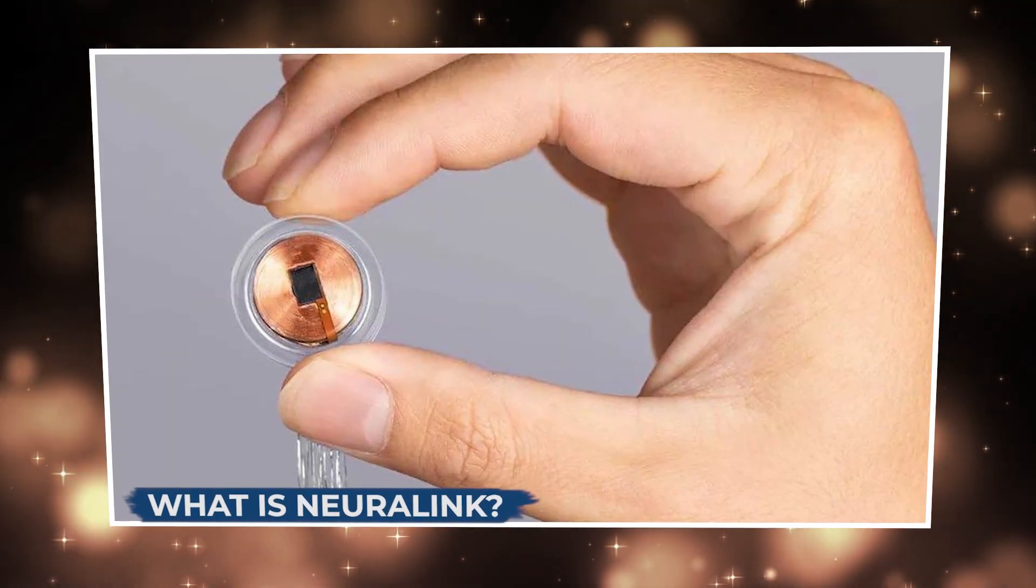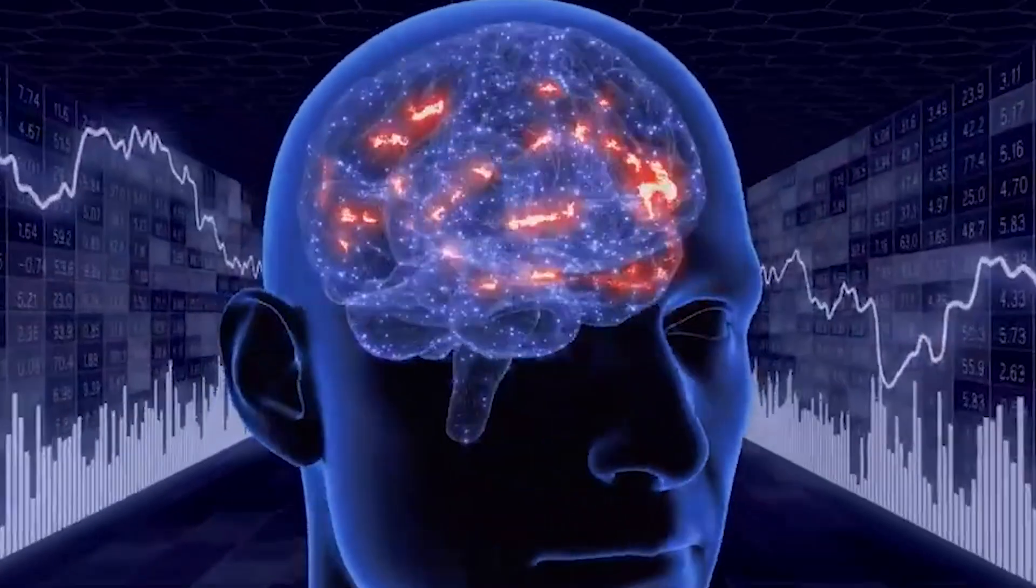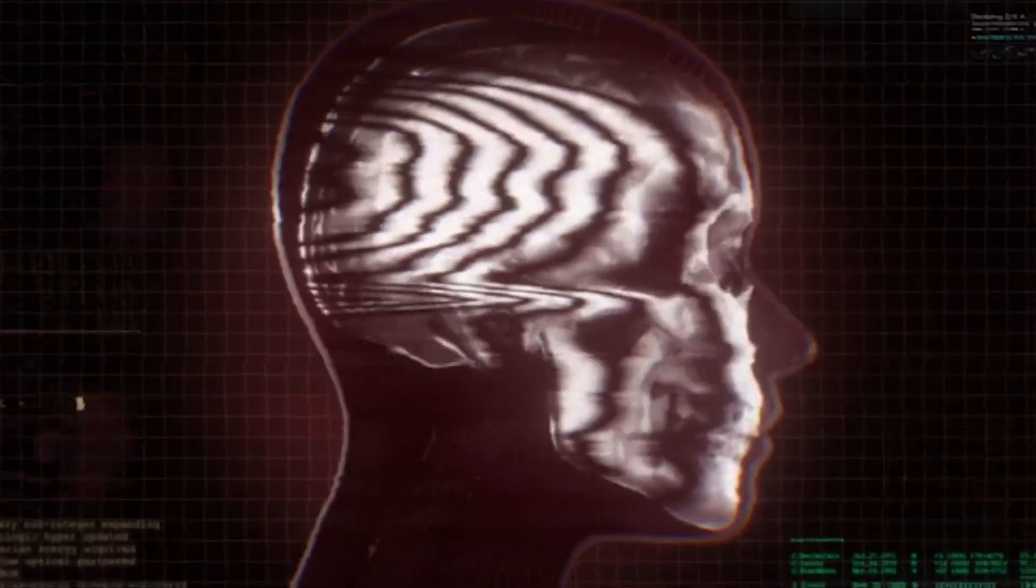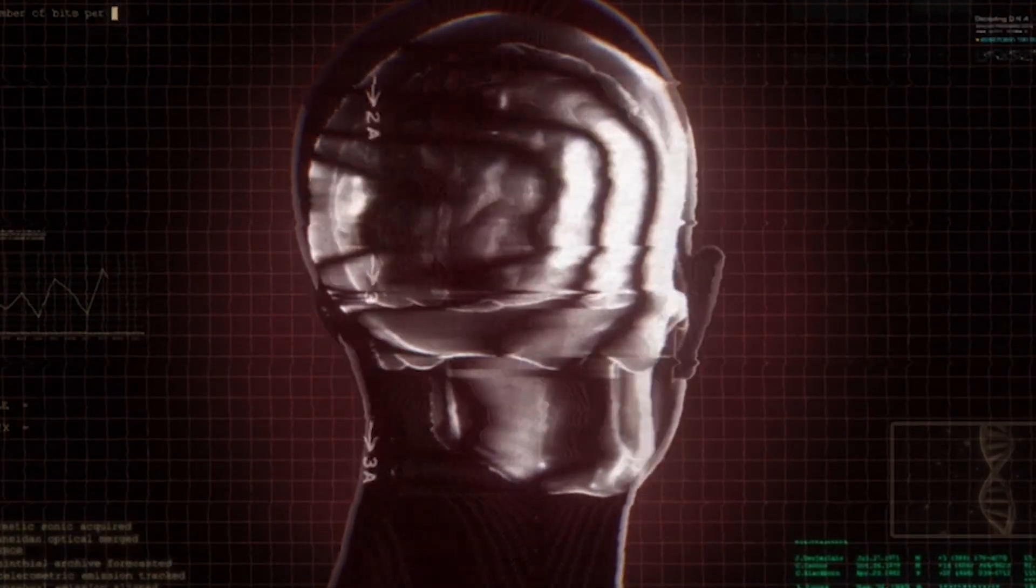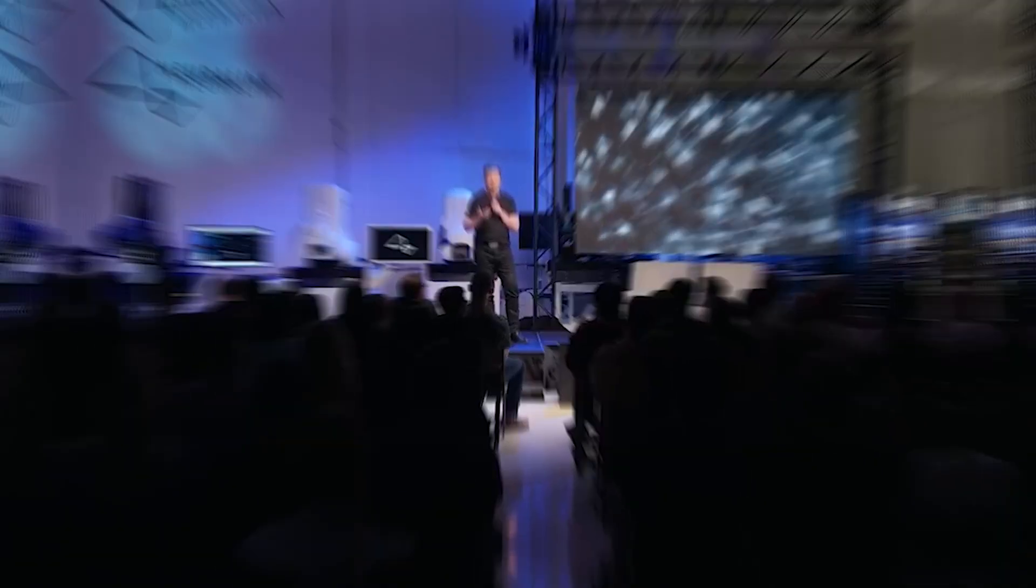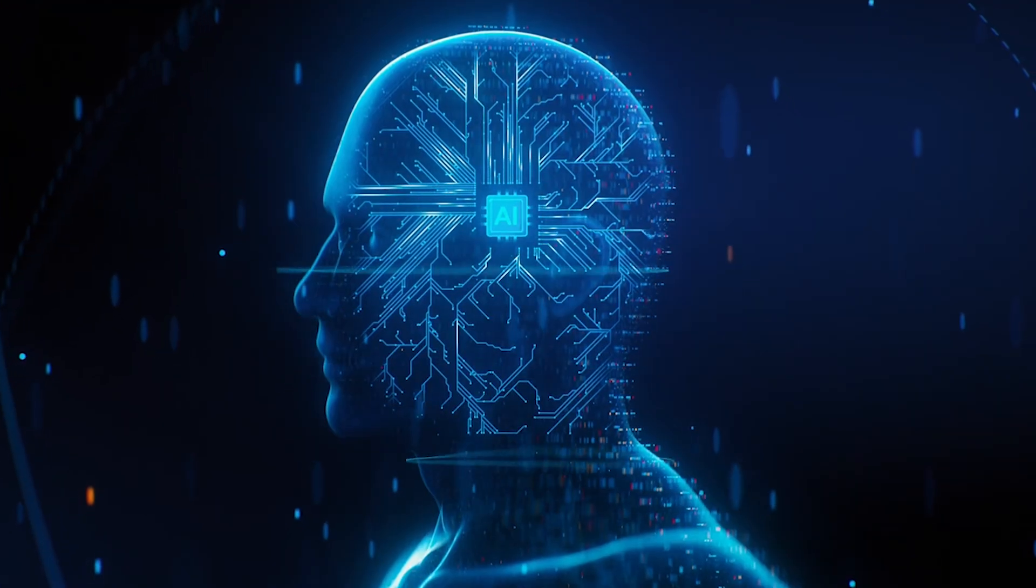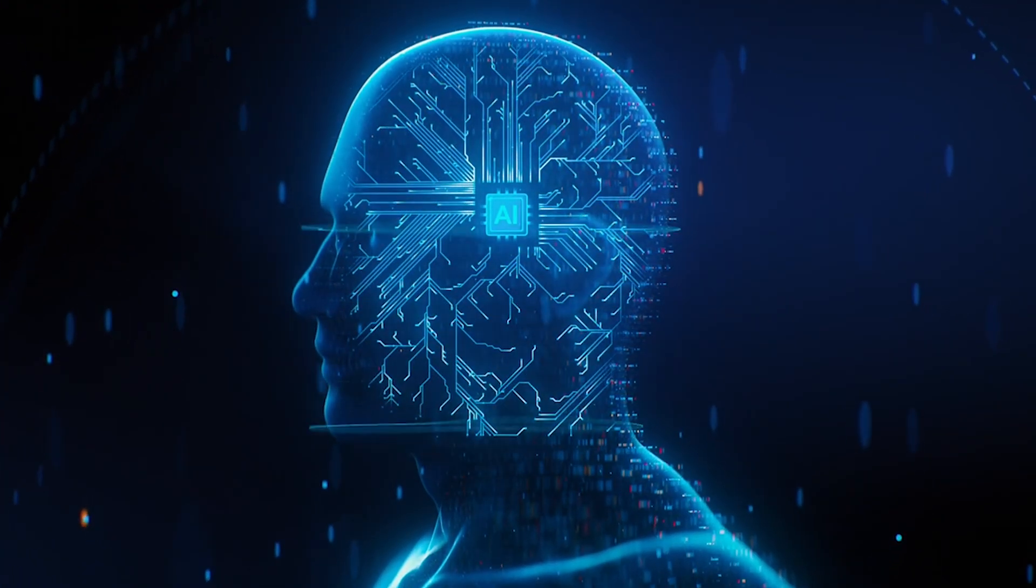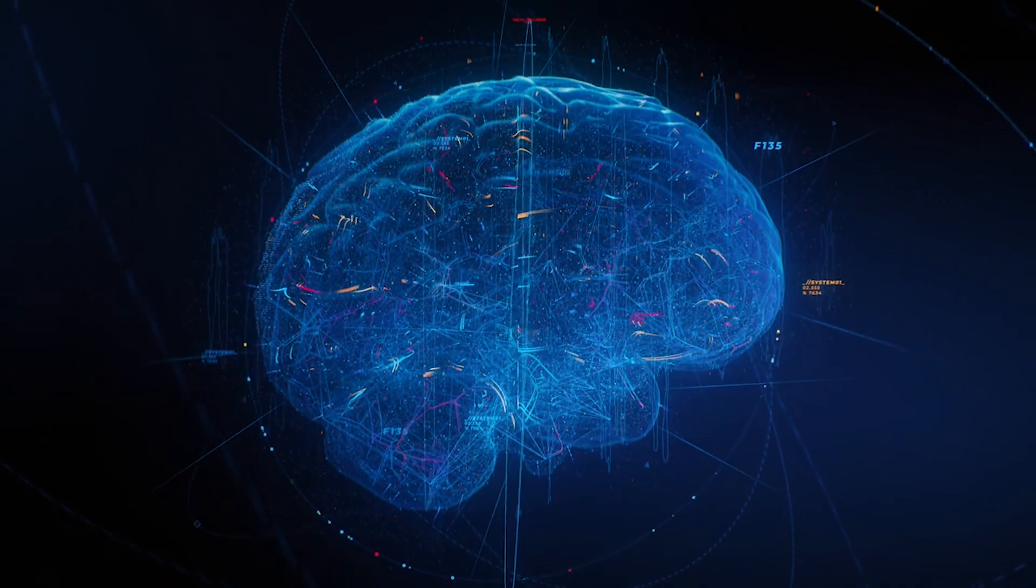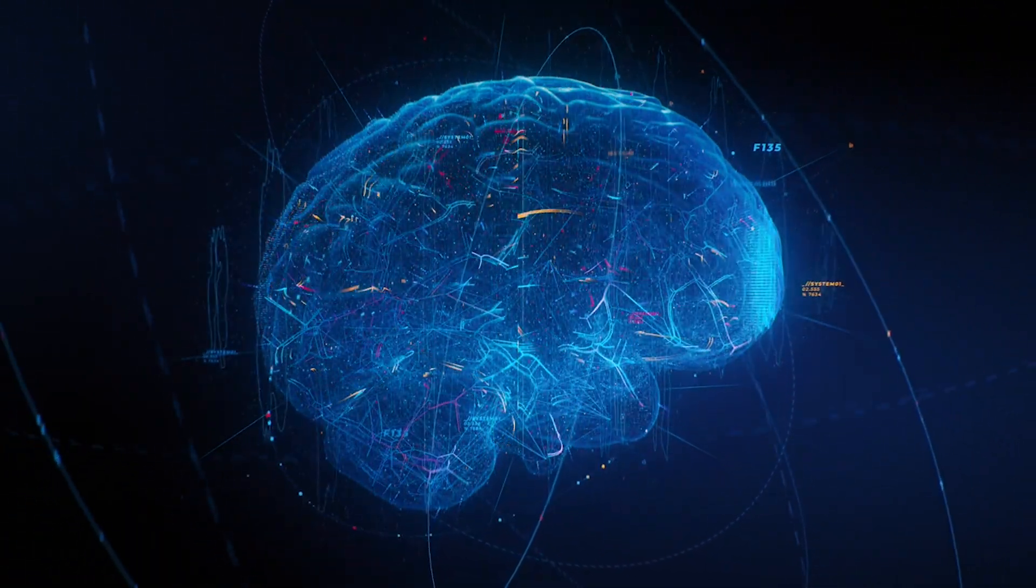Have you ever wondered what it would be like to control technology with just your thoughts? That's the real-world vision of Elon Musk's company Neuralink. Founded in 2016, Neuralink is a neurotechnology startup with one bold mission: to create a direct communication channel between the human brain and machines.